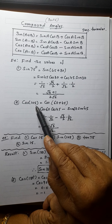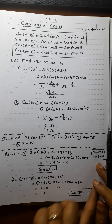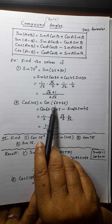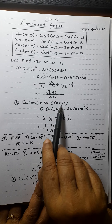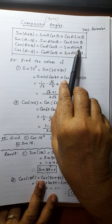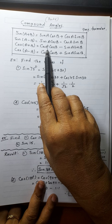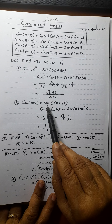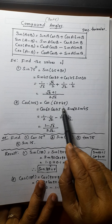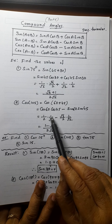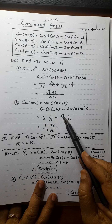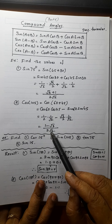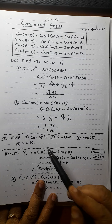For 105°, don't write it as 100 plus 5. Write 105° as 60 plus 45, since you know trigonometrical ratios for 60° and 45°. Cos of (A+B) is cos A cos B minus sin A sin B. So it will be cos 60° cos 45° minus sin 60° sin 45°. Cos 60° is 1/2, cos 45° is 1/√2, sin 60° is √3/2, sin 45° is 1/√2. Taking LCM 2√2, this becomes (1−√3)/(2√2).